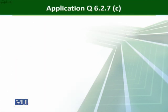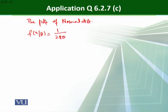First of all, we are going to write down the PDF of the normal distribution. The PDF of normal distribution, that is f given theta, that is 1 over 2 pi theta root, e raised to power minus x square over 2 theta.